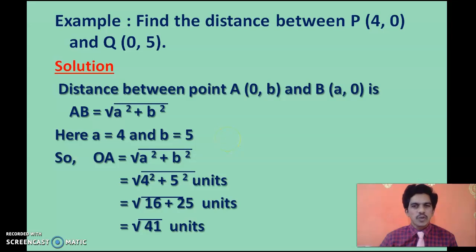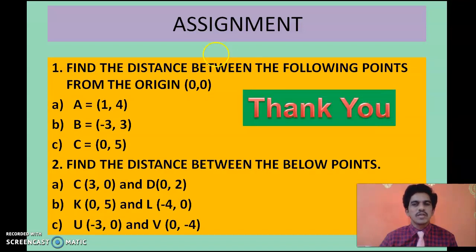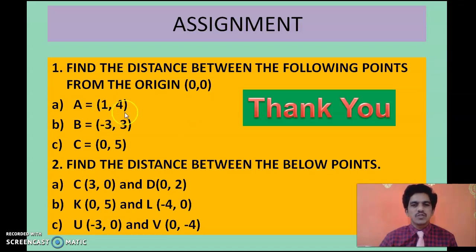This is the assignment for today. Using the first special case, find the distance of three given points from the origin, and using the second case, find the distance between two points on the coordinate axes. Solve these two problems and send the solutions. To summarize: when one point is on the x-axis and the other on the y-axis, or when finding the distance from the origin to a point, you can simply use √(a² + b²). Thank you.